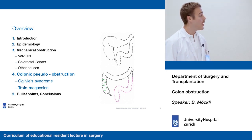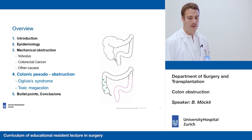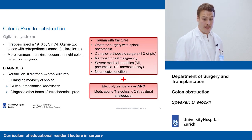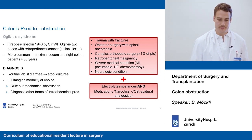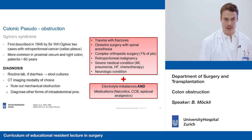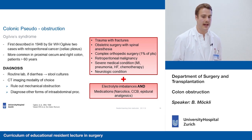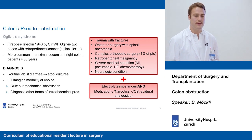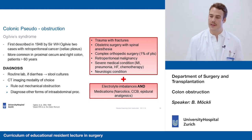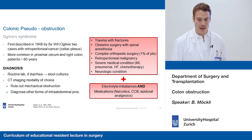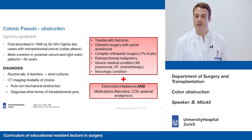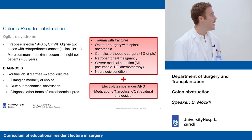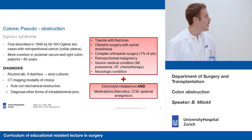Next, colonic pseudo-obstruction, represented by Ogilvie syndrome and toxic megacolon. Ogilvie syndrome is a pseudo-obstruction that does not have a mechanical cause — it's more common in the proximal cecum and right colon, affecting mostly older patients. It was first described in 1948 by Sir Ogilvie, who published two cases of retroperitoneal cancer with plexus invasion and parasympathetic deprivation.